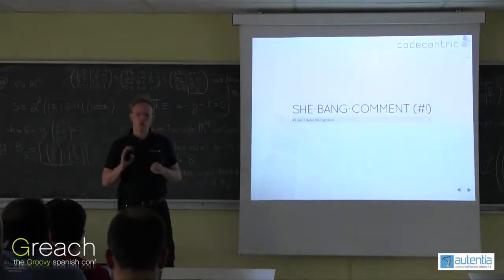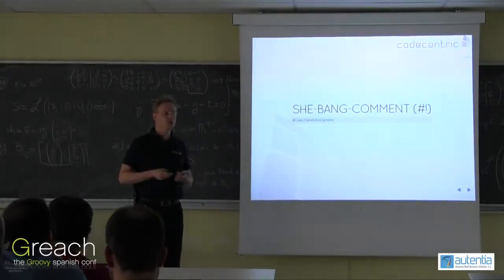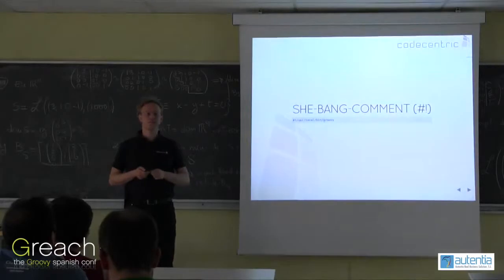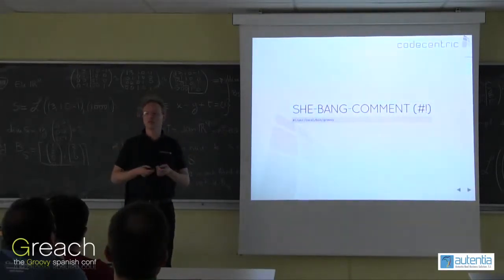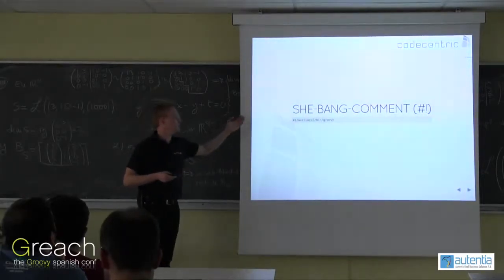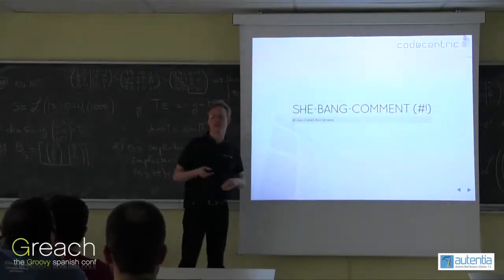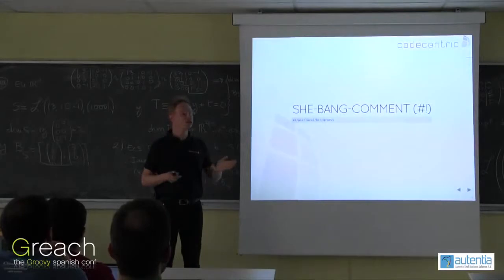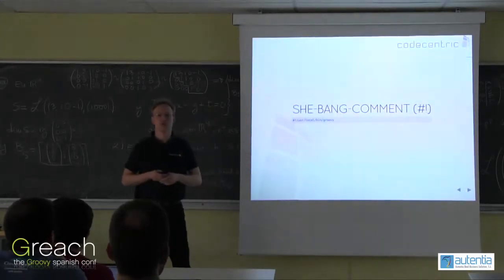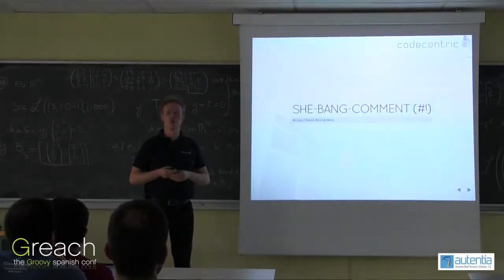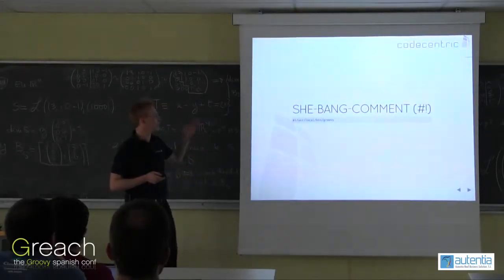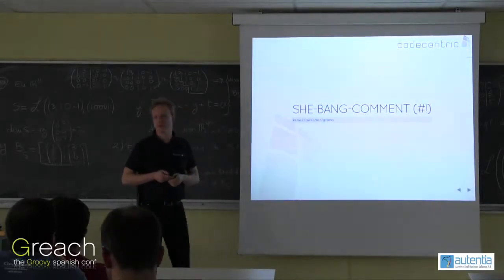But it would be nice if we would just call the script as we would be used to with a normal shell script. We can do that using the shebang command. The shebang command is the hash sign followed by an exclamation mark, and then a command — like calling /usr/local/bin/groovy. Groovy treats that as a normal comment, so if you run it in your Groovy console it's just ignored. But your bash script wants that on the first line of the script — that's where the magic begins.